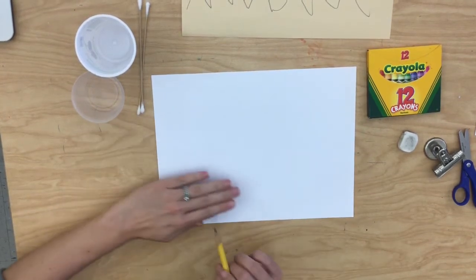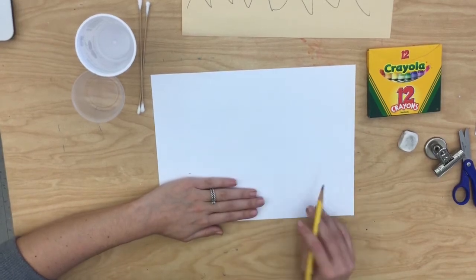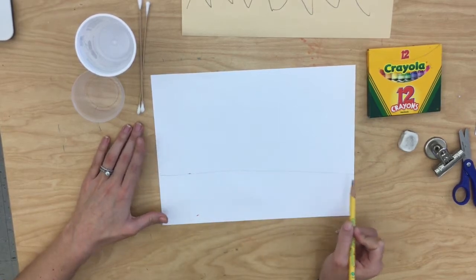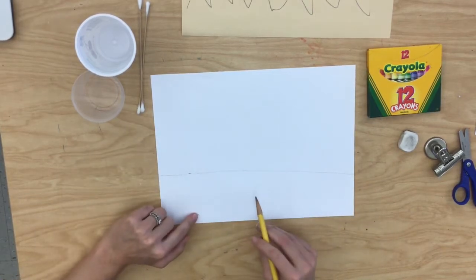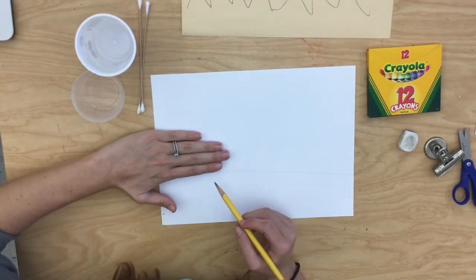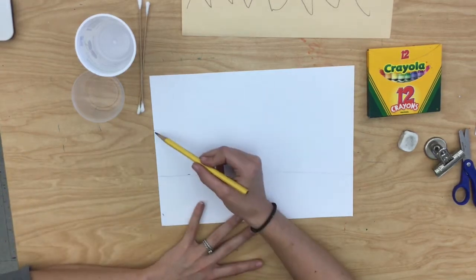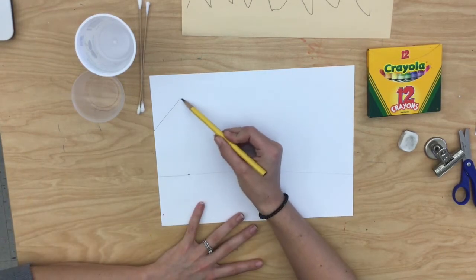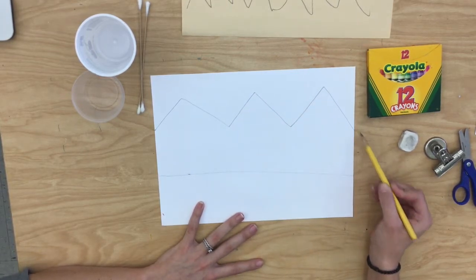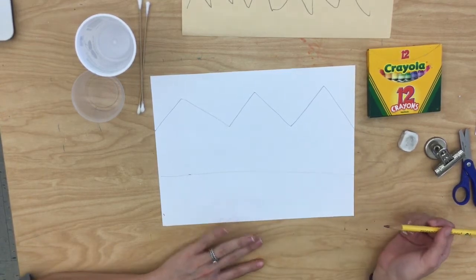You're going to go and put your hand down on your paper and draw a tiny little line. That is where I would like you to draw your straight, horizontal line across. Then you're going to put your hand down again. And that is where you're going to start your zigzag line. Remember, not too many pointy peaks on your zigzag line.